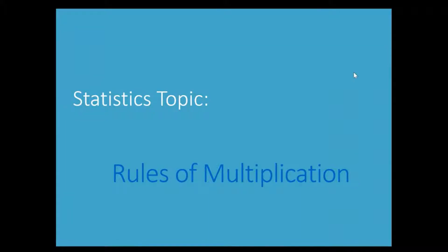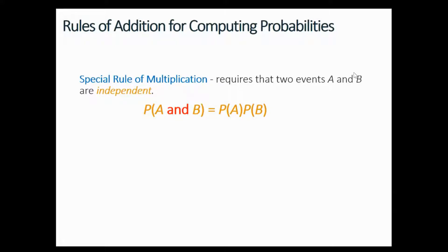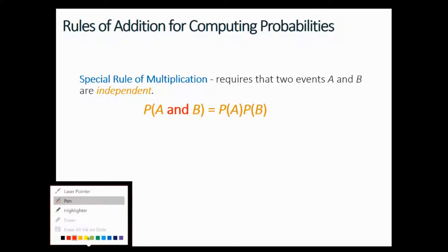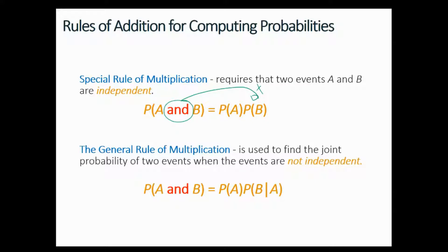Hello and welcome to the statistics topic: Rules of Multiplication. Today we're going to see the rules of multiplication for computing probabilities. We have two such rules. The first one is the special rule of multiplication, which requires that two events A and B are independent. Independent means that one event is not affecting the other event. The probability of A and B is equal to the probability of A times the probability of B, where 'and' means multiplication.